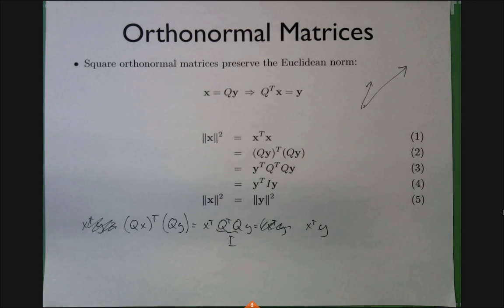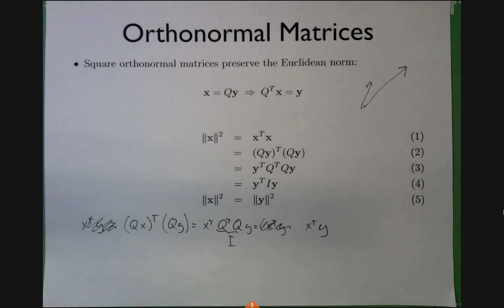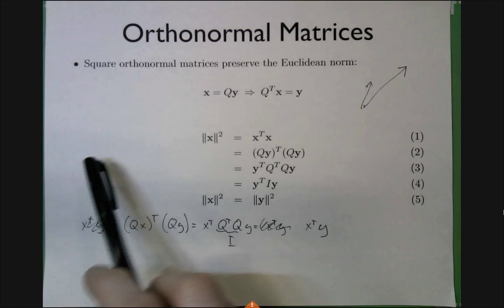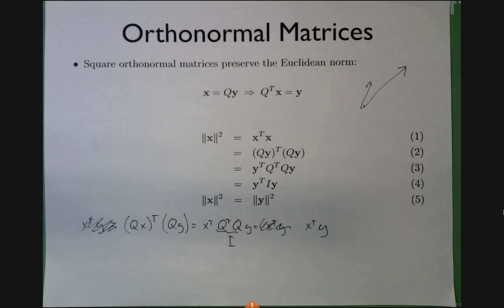The same thing is true for the dot product, and that gives you the idea that square orthonormal matrices are essentially the n-dimensional generalization of rotations. There's one catch: they can also be reflections. We'll learn how to distinguish the two when we talk about determinants. Orthonormal matrices with determinant one are basically the generalization of rotations to n dimensions.